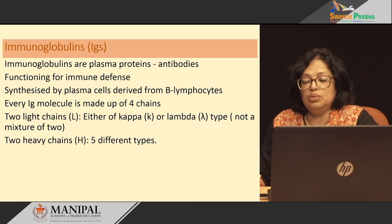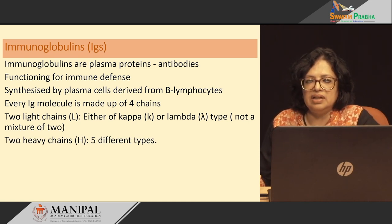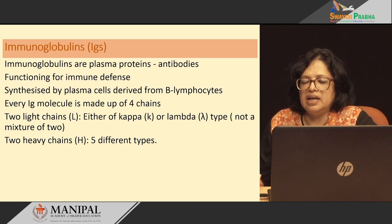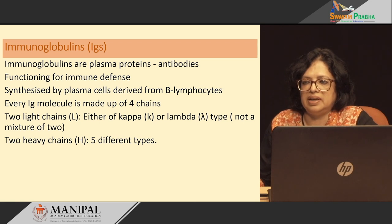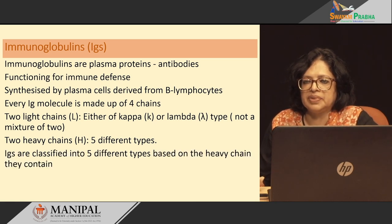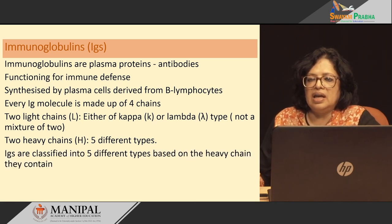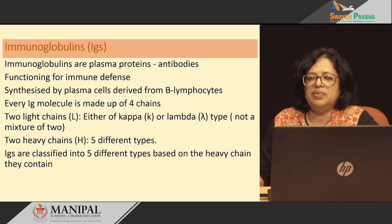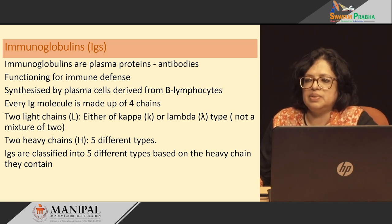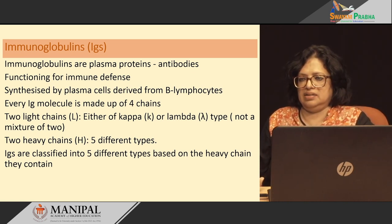Then there will be 2 heavy chains, which are denoted by a capital H, and these heavy chains are of 5 different types. Immunoglobulins are classified into 5 different types based on the heavy chain they contain.